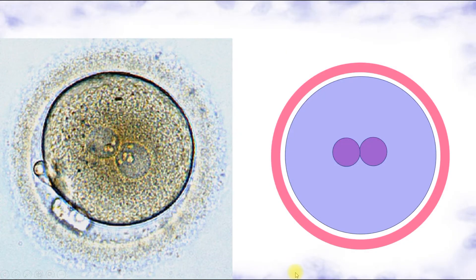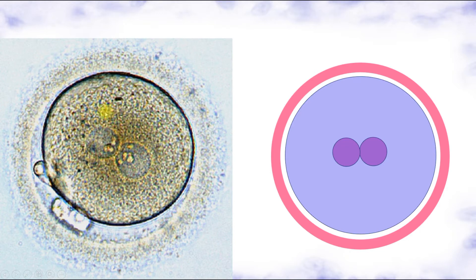Let's begin from the first week of embryogenesis and talk about cleavage. Embryogenesis begins from fertilization, which results in the formation of a unicellular embryo called the zygote. The zygote has cytoplasm and pronuclei — one from the mother (nucleus of the ovum) and one from the father. Each pronucleus contains 23 chromosomes, together forming 46 chromosomes — the complete set for the new organism. The zygote is surrounded by the zona pellucida.